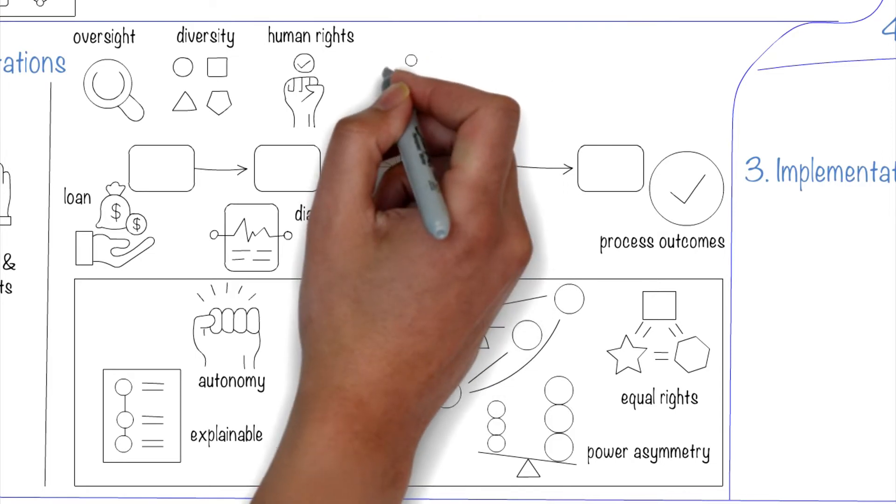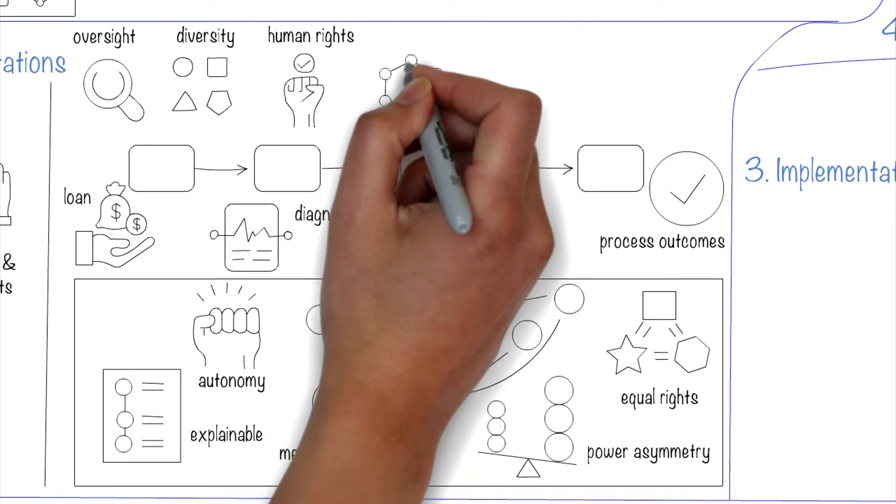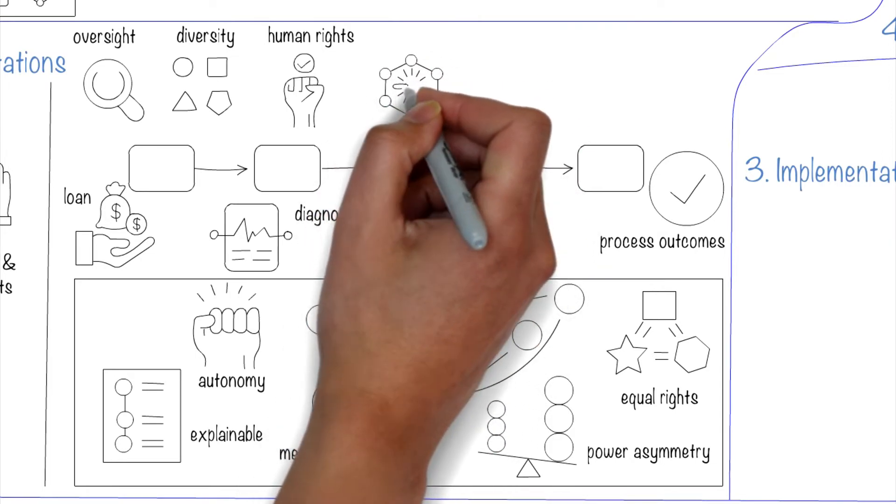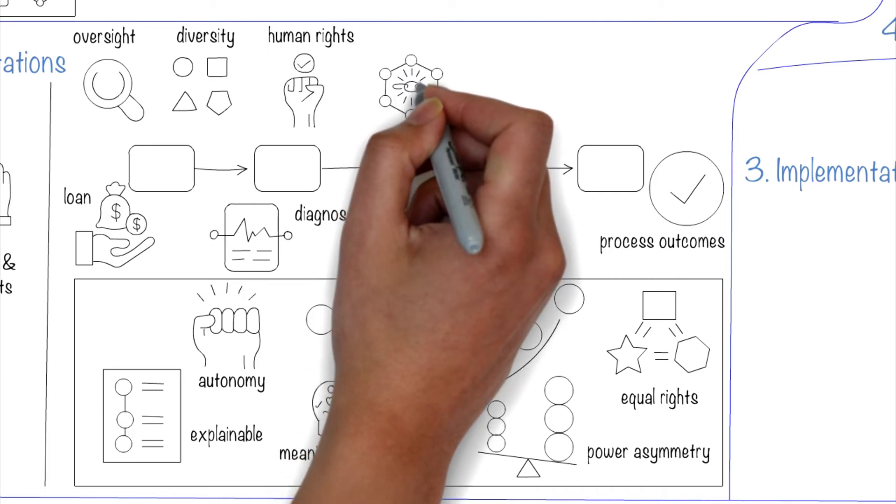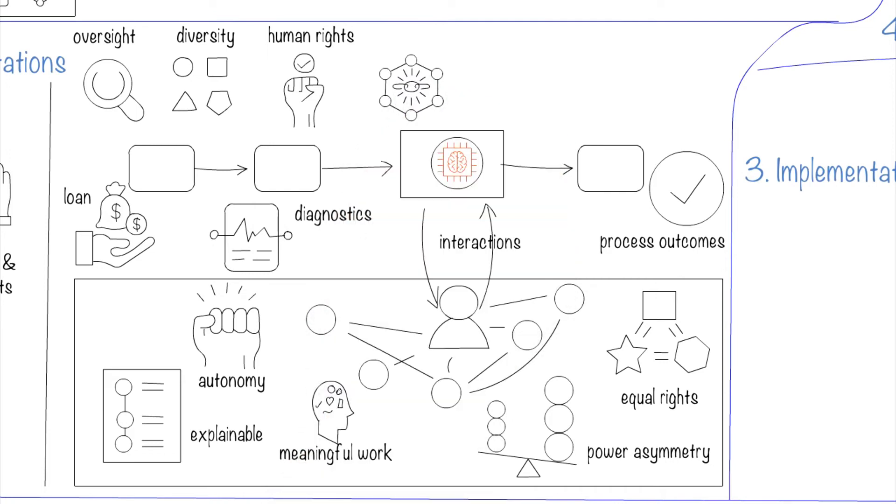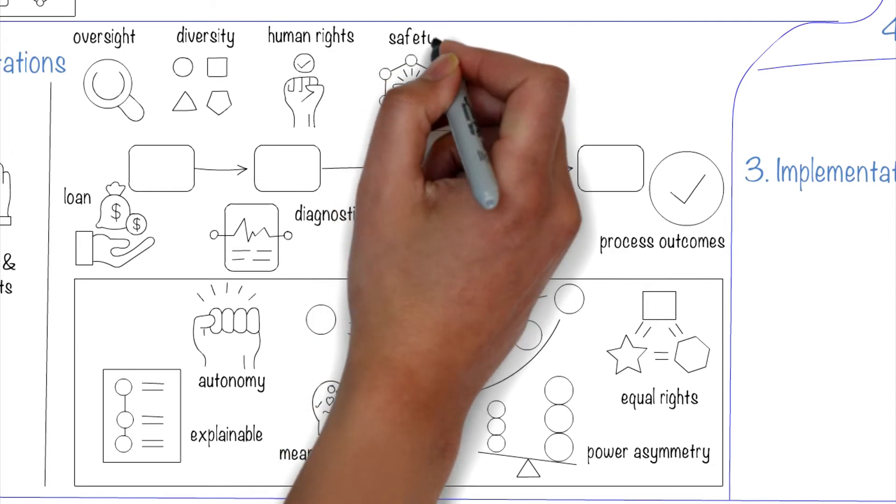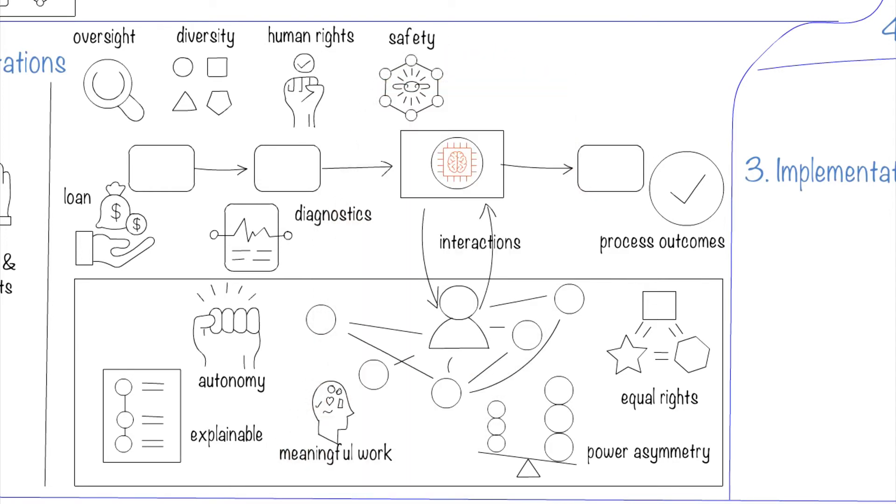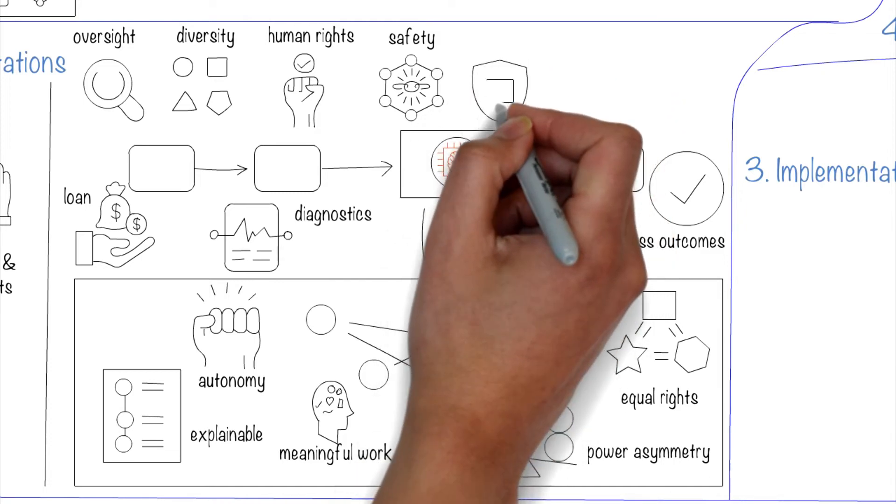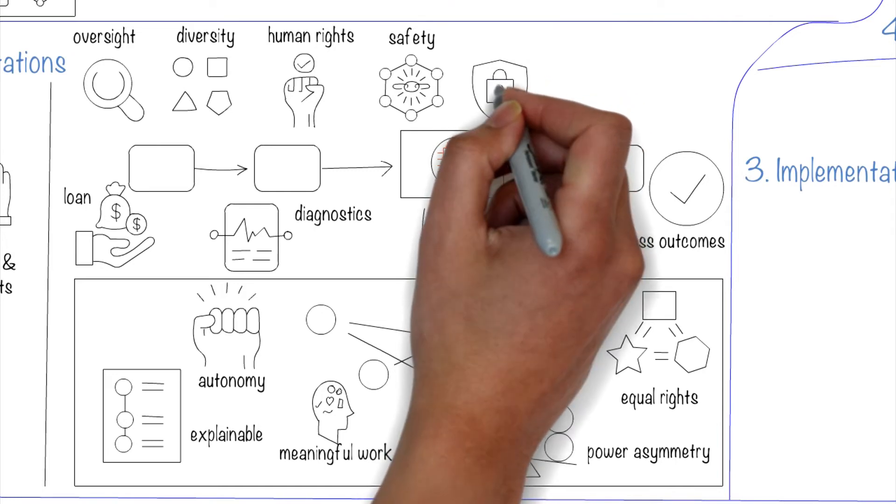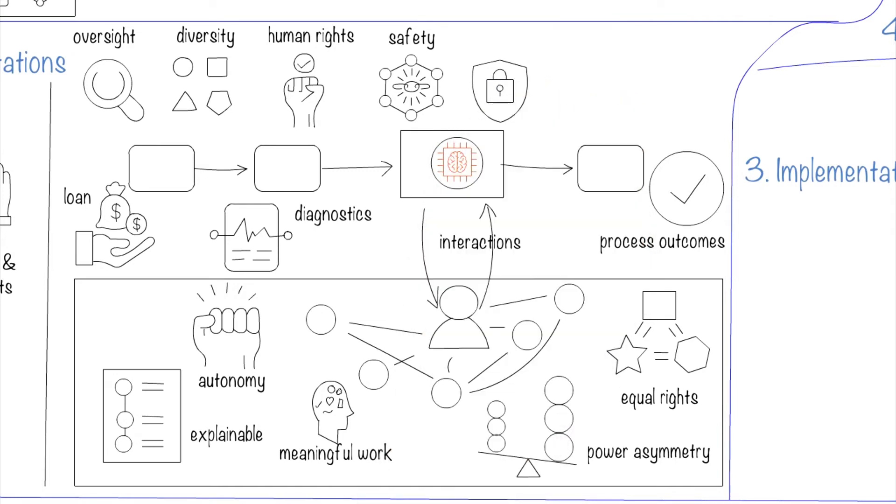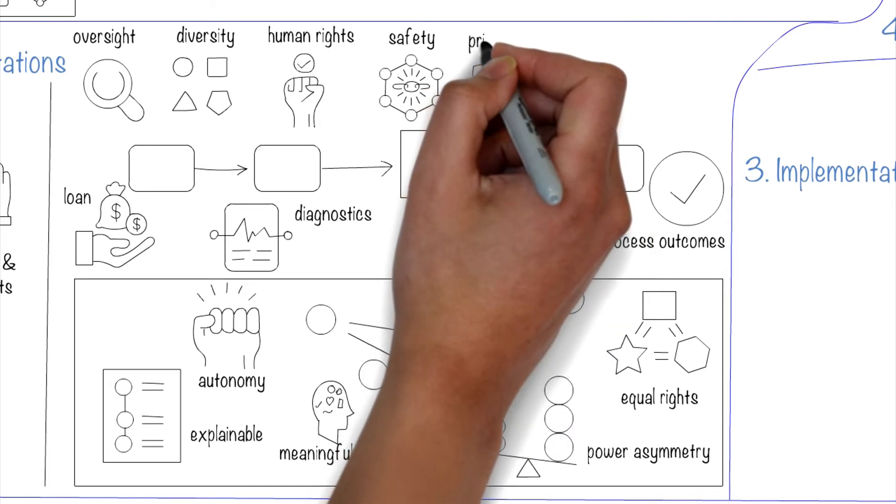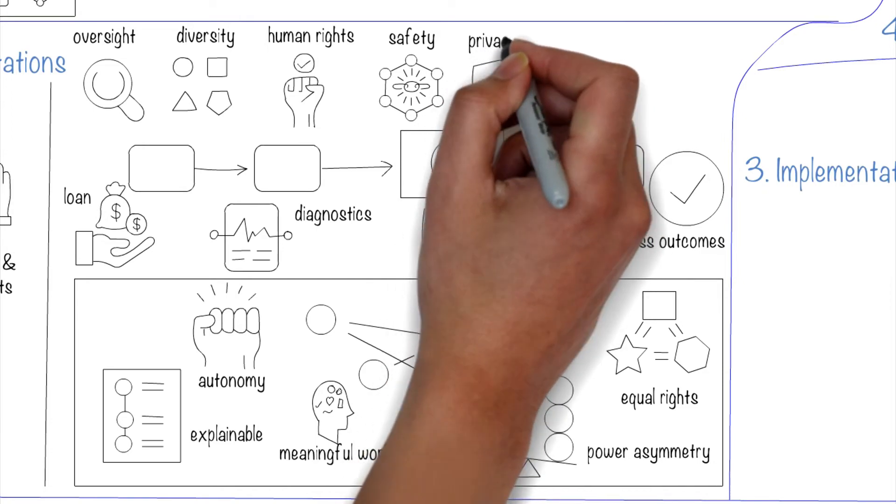On the technical side, we want the system to be robust and resilient against attacks, reliable and accurate, and reproducible. If the system is compromised or behaves erratically, we should be able to bring it back to a safe state. We also want the data privacy to be respected and governed properly. The quality of the data should be high, and access to the data should be controlled.